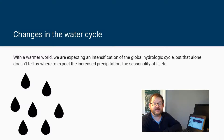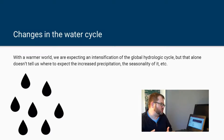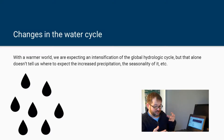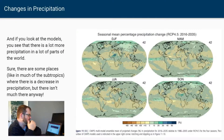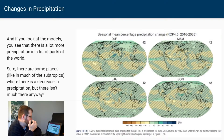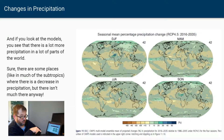Everything I've shown you so far in this lecture was about what models are telling us about changes in temperature in the near-term climate. Let's start getting more general than that and talk about changes in the water cycle. Back in the first module of the course, we talked about the fact that in a warmer world, we're expecting some intensification of the global hydrologic cycle — more evaporation, more water vapor in the atmosphere, and therefore more precipitation. The IPCC Fifth Assessment Report has examined this in great detail, and we're going to be picking apart a set of diagrams that show changes in precipitation based on the RCP 4.5 model run.